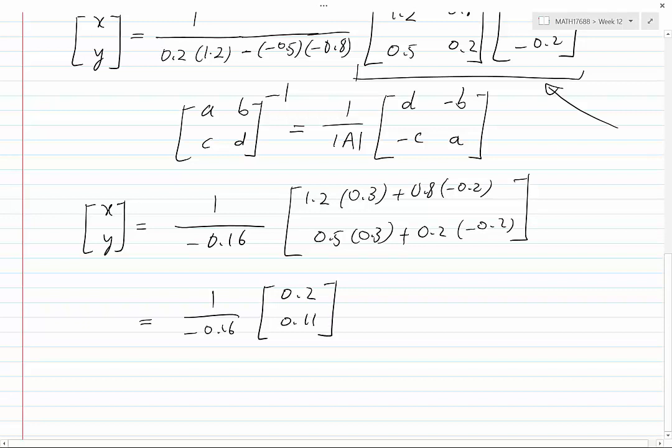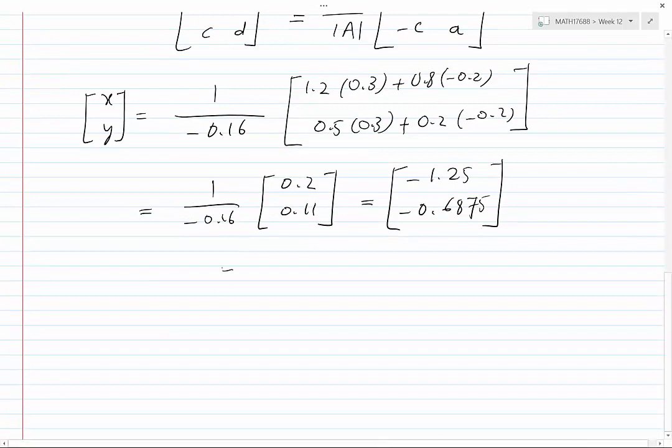Now we can multiply the coefficient and we would get minus 1.25 and minus 0.6875. In brief, this is what we have found: the unknowns x and y are equal to minus 1.25 and minus 0.6875 respectively.